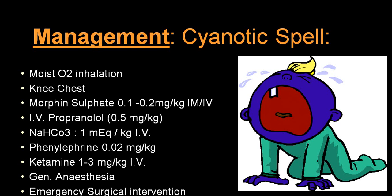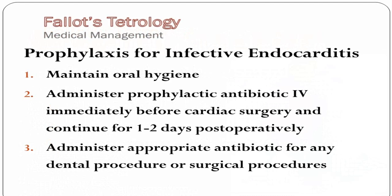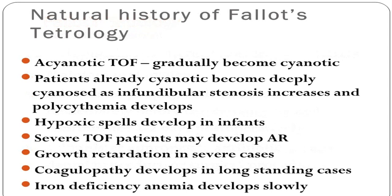Supportive treatment includes squatting position, oxygen, sodium bicarbonate for correction of acidosis, prevention of episodes with propranolol, and treatment of anemia with iron supplements — very helpful to reduce cyanotic spells. In polycythemia, avoid dehydration and perform phlebotomy. Prophylaxis for infective endocarditis with antibiotics is important.